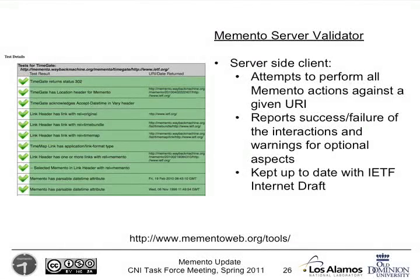We have a validator. A lot of people have been asking, we think we've done Memento right but we're not sure, can you have a look? So we put up this automated tool that goes off and acts like a Memento client, trying to do all of the interactions that a regular client would do. You give it a URI for a TimeGate, an original resource, or a Memento, and it reports the success or failure for each of the different sorts of interactions. This validator is then kept up to date with the IETF internet draft.